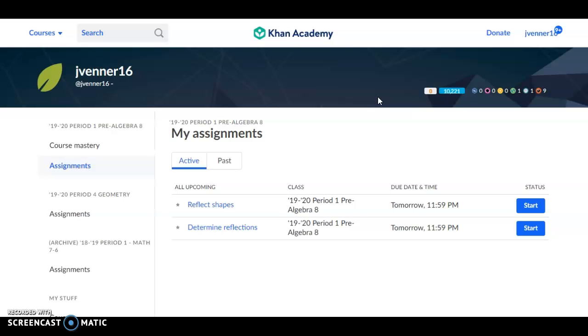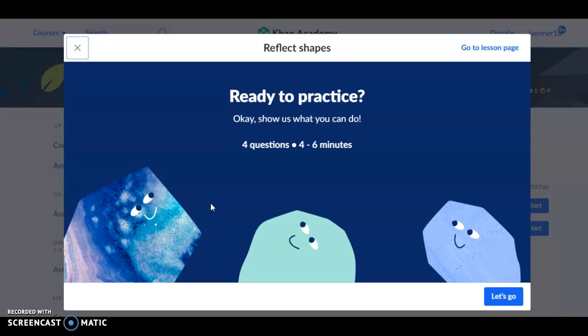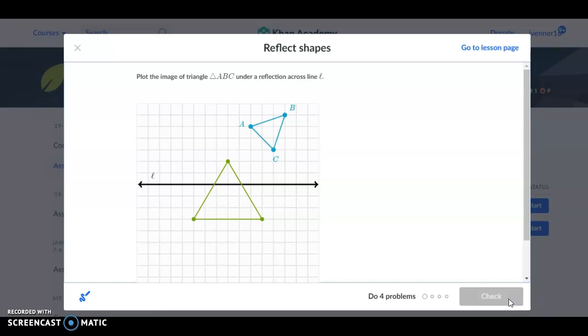I've gone into Khan Academy as a student and I will open up an assignment I am to work on. So I get to the assignment and I may plot the image of triangle ABC under the reflection across line L.